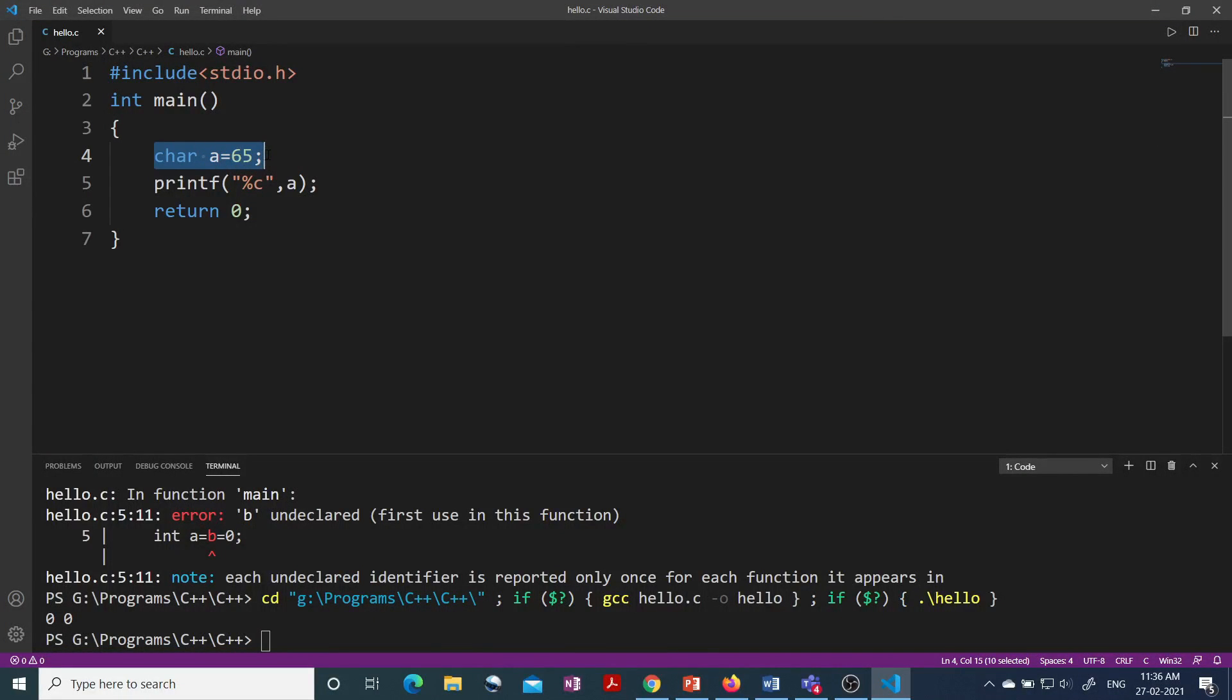So here you can see I have written char a equal to 65 and then I am printing the character a using percent C. So let's see what is the output.